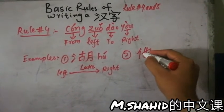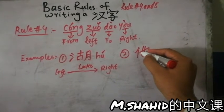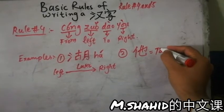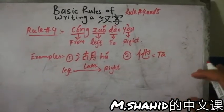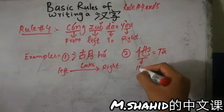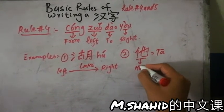Another example, another example is, let's just discuss a simple example. This is 他, this is a character which is used for saying he.